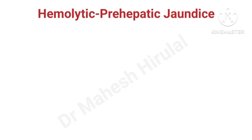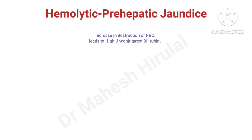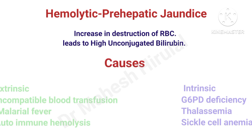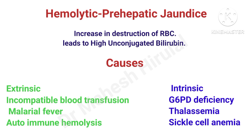Hemolytic or prehepatic jaundice is caused by increased destruction of RBCs, which leads to high unconjugated bilirubin. The causes may be extrinsic or intrinsic. Extrinsic causes include incompatible blood transfusion, malarial fever, or autoimmune hemolysis. Intrinsic factors include G6PD deficiency, thalassemia, and sickle cell anemia.